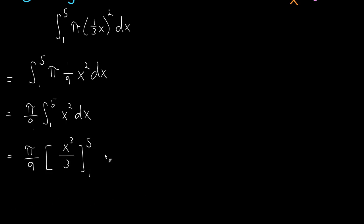And so let's go ahead and make some more space for ourselves. So this is π/9 times—we plug in five and we get 5 cubed over three, minus, and then we plug in one, 1 cubed over three.